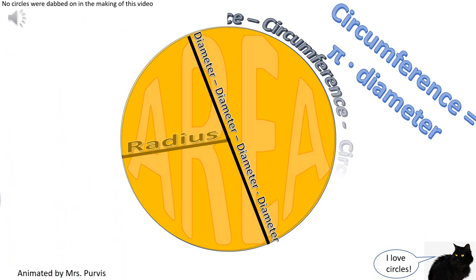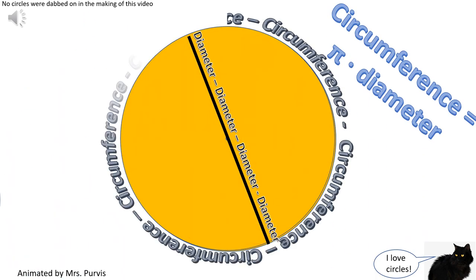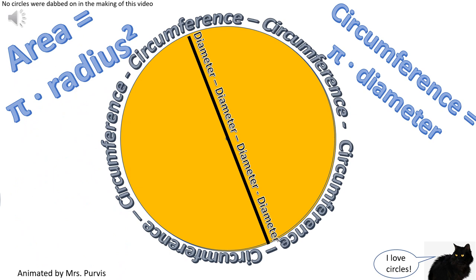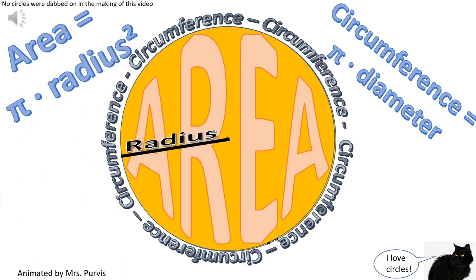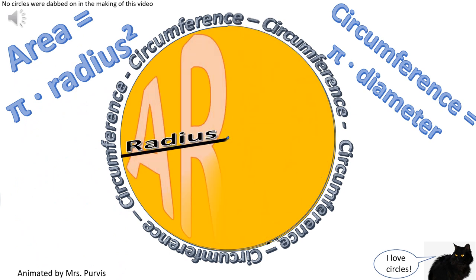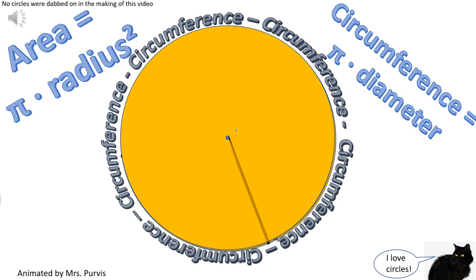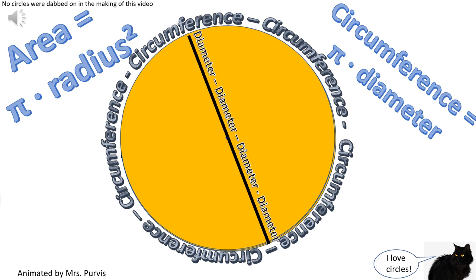when I need a circumference I'll just use pi d. Pi r squared sounds like area to me, when I need a circumference I'll just use pi d.